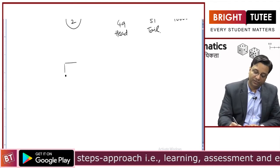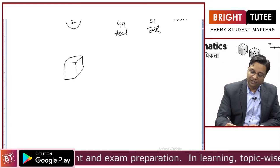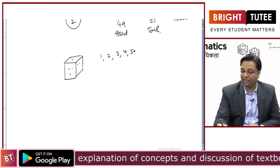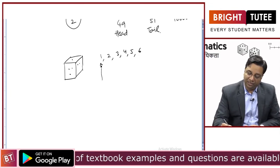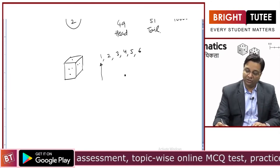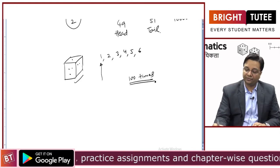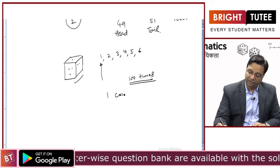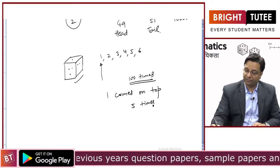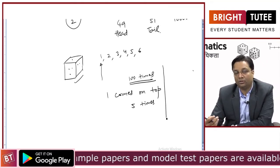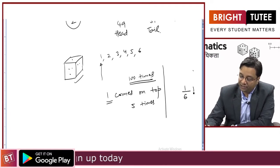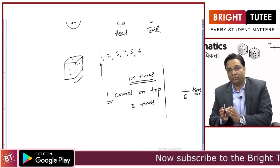This is also true when you throw a die. When you throw a die, there are 6 possible outcomes: either 1, 2, 3, 4, 5, or 6 can come. What is the chance that 1 will come when you throw a die? You perform the experiment — if you throw a die 100 times and 1 comes on top, say, 5 times, as you increase the number of throws the result will come closer to 1 out of 6 times.